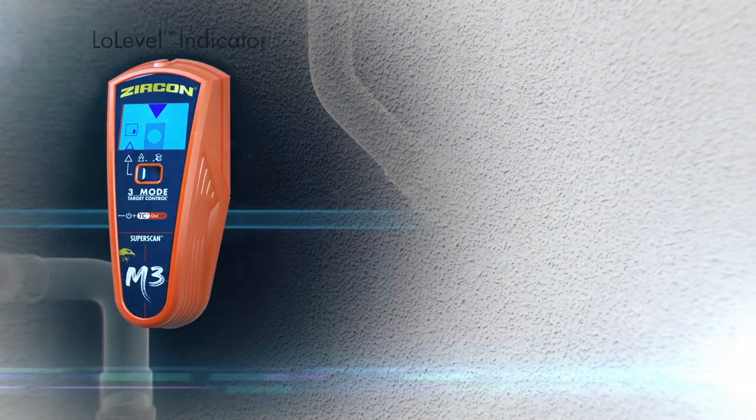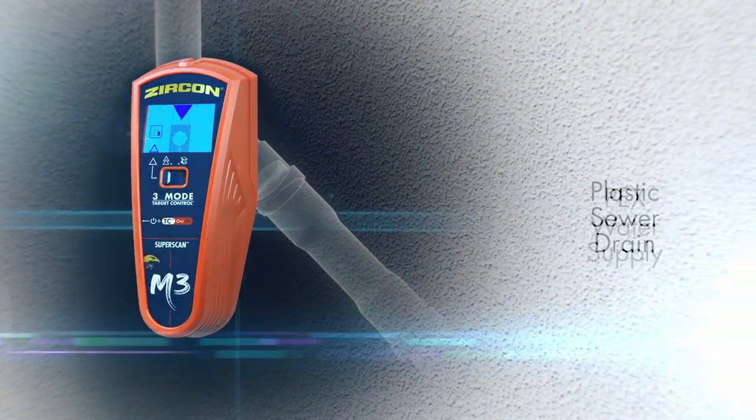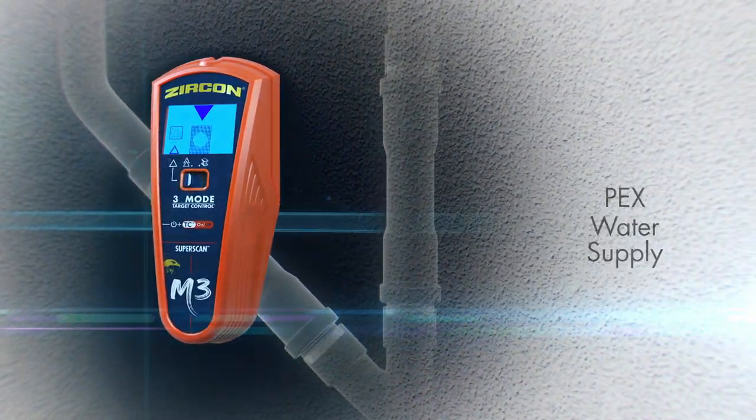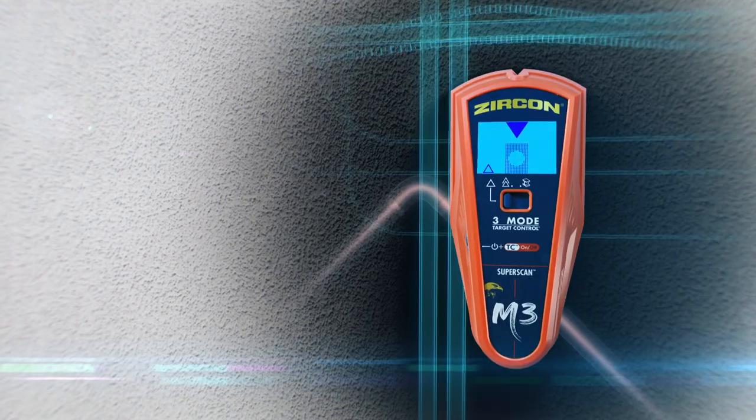And the new low-level indicator cancels weak signals, which could be plastic sewer drains, PEX freshwater supply lines, or electrical and data lines.